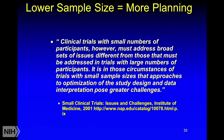Back in 2001, the Institute of Medicine put out a monograph called 'Small Clinical Trials: Issues and Challenges.' In it they say: clinical trials with small numbers of participants must address broad sets of issues different from those in trials with large numbers. Approaches to optimization of study design and data interpretation in small sample size trials pose greater challenges. In other words, that can be summarized in two words: more work.